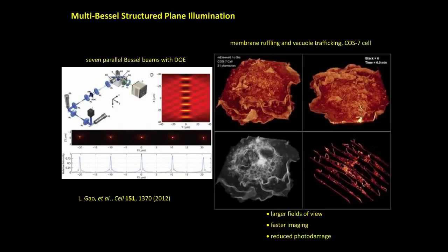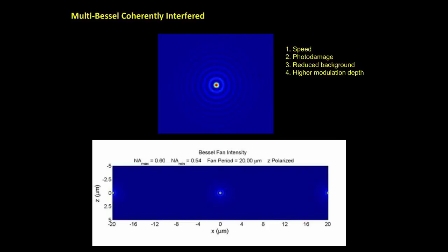We wanted to make even more beams — like 100 or 200 beams. It's very hard to do this with passive optics from gratings, so we figured out a way using a spatial light modulator (SLM). From the movie, you can see that by controlling the distance between each Bessel beam, you can achieve very specific optical interference properties.